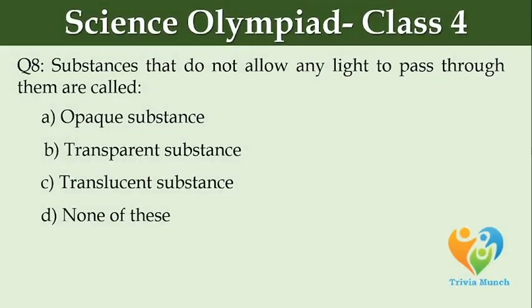Substances that do not allow any light to pass through them are called dash. Option A: opaque substance. Option B: transparent substance. Option C: translucent substance. Option D: none of these.